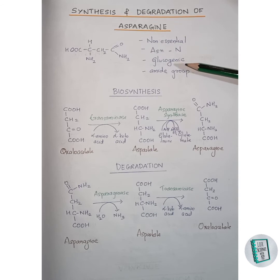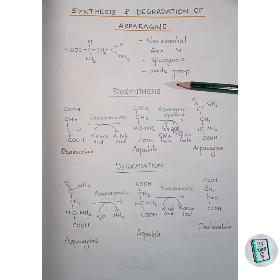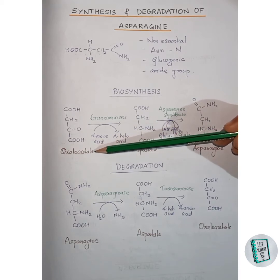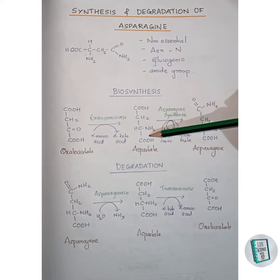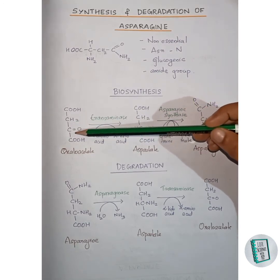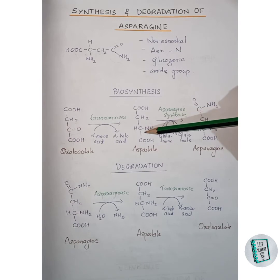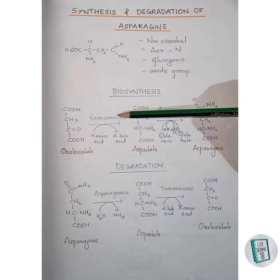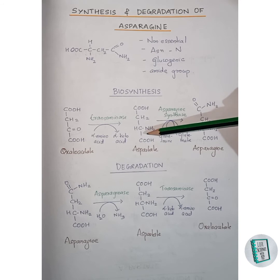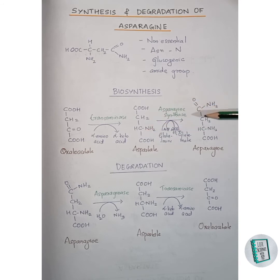Now let us move on to the biosynthesis of asparagine. The asparagine biosynthesis starts with oxaloacetate. First, oxaloacetate gets transaminated to aspartate — the keto group of oxaloacetate gets replaced by an amino group in the presence of transaminase enzyme, forming aspartate. This aspartate then, in the presence of asparagine synthase, forms asparagine.